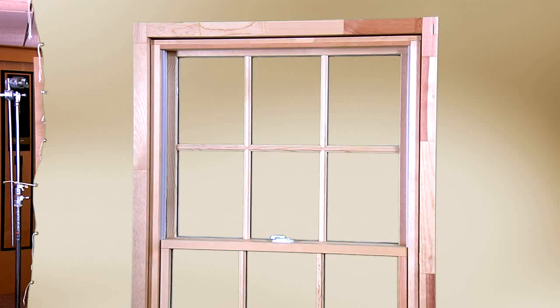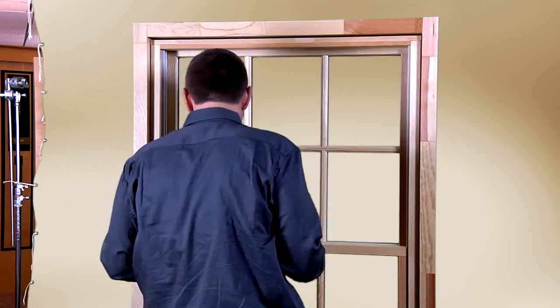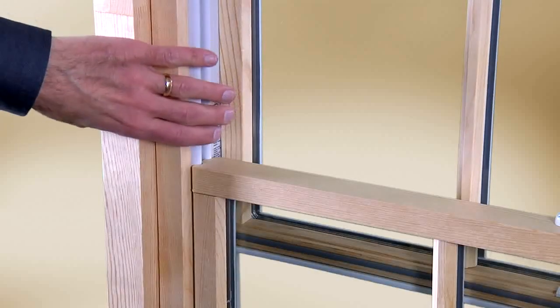Tilting the sash on your double hung window makes it easy to clean exterior surfaces from the interior of your home. Start by unlocking and opening the sash.